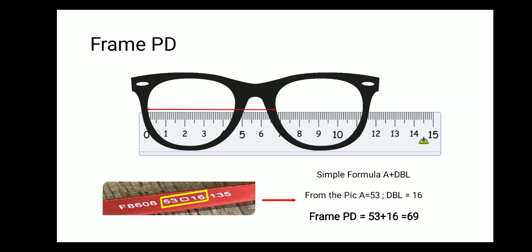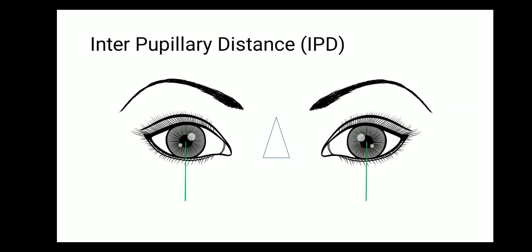If you want to consider just half the frame, divide the frame PD by 2 — in this example that gives you 34.5, which is your monocular frame PD.